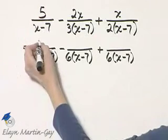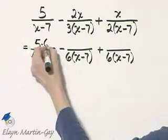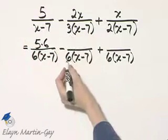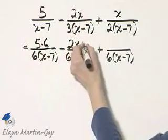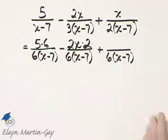So I have 5 times 6. What do I do to this denominator to have this one? I multiply by 2. So whatever that numerator is, I multiply by 2.